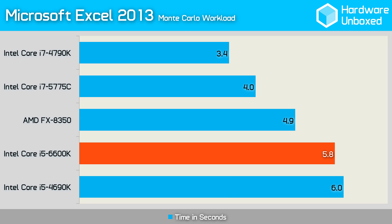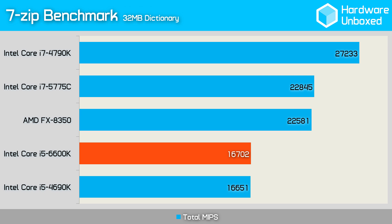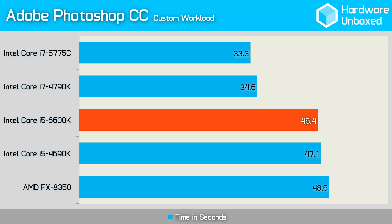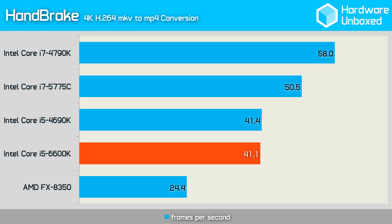Our Microsoft Excel test results were in line with the others so far, with the 6600 taking 0.3 seconds less to complete the Monte Cali workload than its Haswell counterpart, the 4690. The 7-zip scores weren't any different, with the two CPUs scoring virtually the same — again, the 6600K claimed a very minor victory. Our Photoshop benchmark told the same story; the 6600 just edged out the 4690K. In our final workload benchmark, we ran it through Handbrake's conversion test and performance was very similar once more, though this time the 4690K claimed its first scalp.